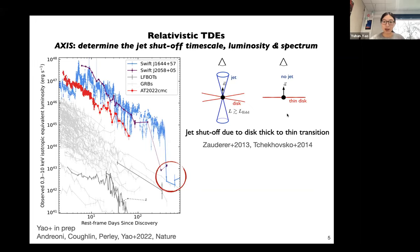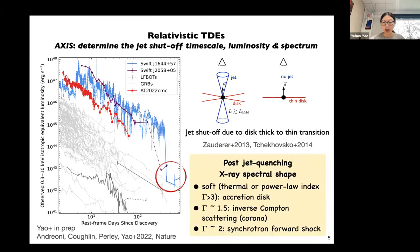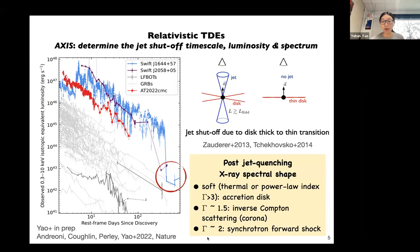With AXIS, we want to verify if such a late-time jet shutoff exists in all relativistic TDEs. More importantly, we also want to measure the post-jet-quenching X-ray spectral shape, which encodes information about the origin of the X-ray emission. If the X-ray spectrum is very soft, the X-rays may originate from thermal emission in a geometrically thin disk. If it is very hard, the X-rays may be produced by inverse Compton scattering of thermal seed photons in a corona region. And if the power law index is close to two, the X-rays may come from the high-energy extension of the same forward shock synchrotron emission observed at radio frequencies.